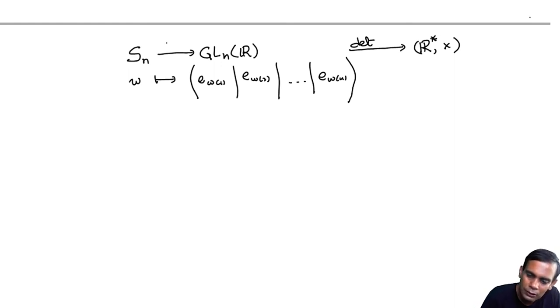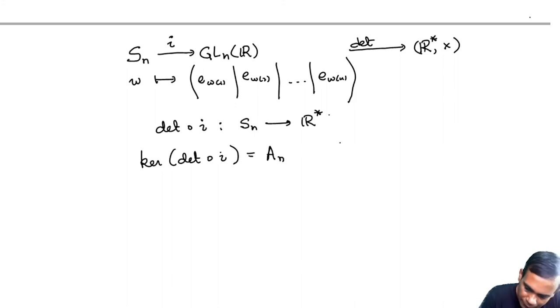If you compose this, so let's call this i, then determinant circle i is a homomorphism from Sn to R star.